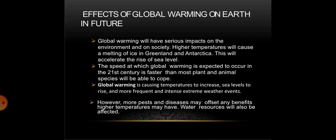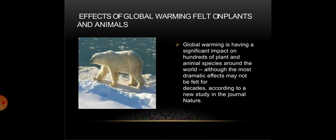Global warming is causing temperatures to increase, sea levels to rise, and more frequent and intense extreme weather events. However, more pests and diseases may offset any benefits higher temperatures may have. Water resources will also be affected. Global warming is having a significant impact on hundreds of plant and animal species around the world, although the most dramatic effects may not be felt for decades, according to a study in the journal Nature.